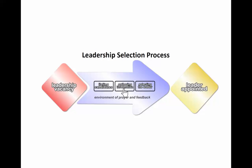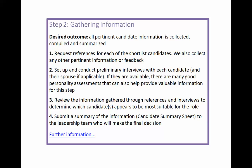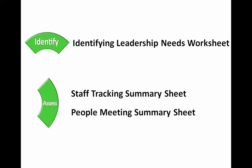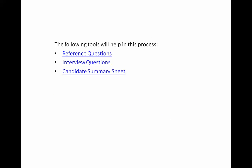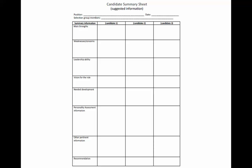Step two is gathering information. It involves collecting, compiling, and summarizing pertinent candidate information needed to select the most suitable person for the leadership role. In addition to considering information from step one, this also includes gathering information from references and conducting interviews with each candidate. Tools in this toolkit include sample reference questions, interview questions, and a candidate summary sheet, where you can track the different candidates and provide a summary of information for a number of important areas.